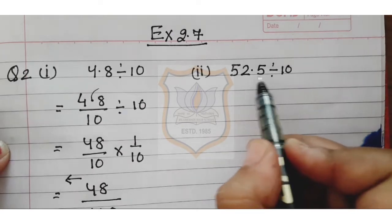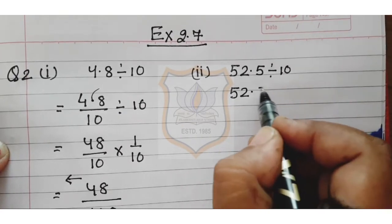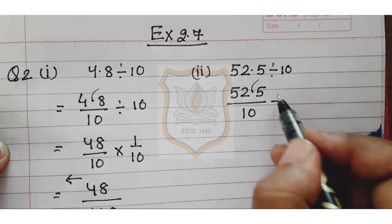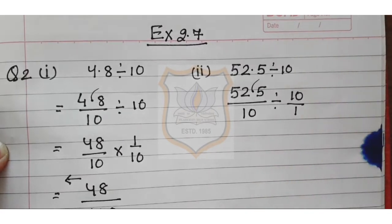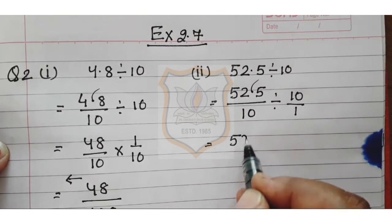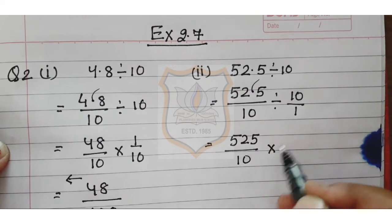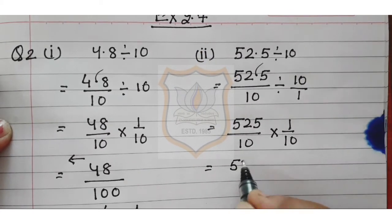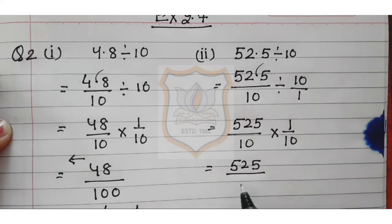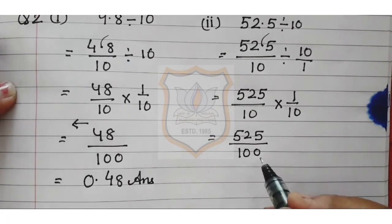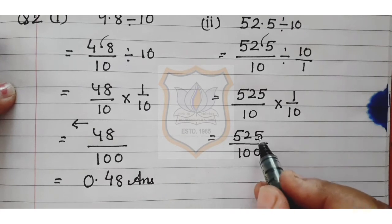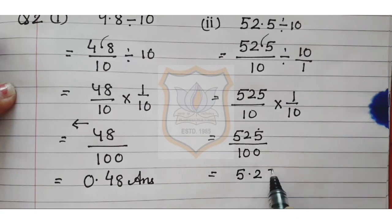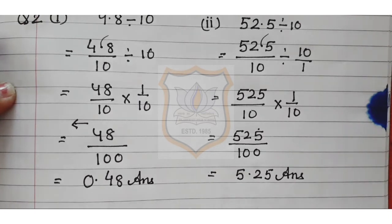Next: 52.5 divided by 10. We write 52.5 upon 10 to remove the decimal, giving 525 upon 10, divided by 10 upon 1. That equals 525 upon 10, multiplied by 1 upon 10, giving 525 upon 100. There are 2 zeros, so the decimal moves 2 digits left. Our answer is 5.25.